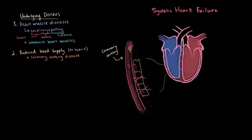If that plaque builds up so much that it completely obstructs the vessel, none of those cells get any oxygen at all and they all end up dying off. This is really serious because whole areas of cells can die — and this is why heart attack is a major contributor to systolic heart failure.